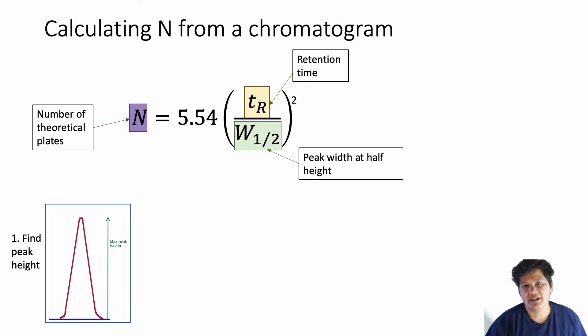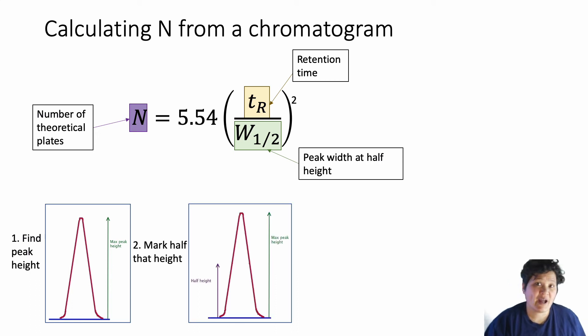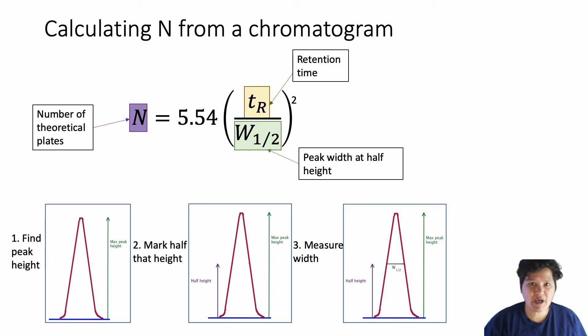First, measure your peak height. I've actually done this with a ruler on a printout, but some software actually does it for you. Now you figure out where half that height is on your peak. And at that height on the peak, measure the width of the peak. Now in this case, when I say measure the width, I don't mean get out your ruler and figure out how many centimeters it is. The correct unit for that width is minutes. I know that seems weird because we usually don't measure widths in time, but when it comes to chromatography peaks, we do.